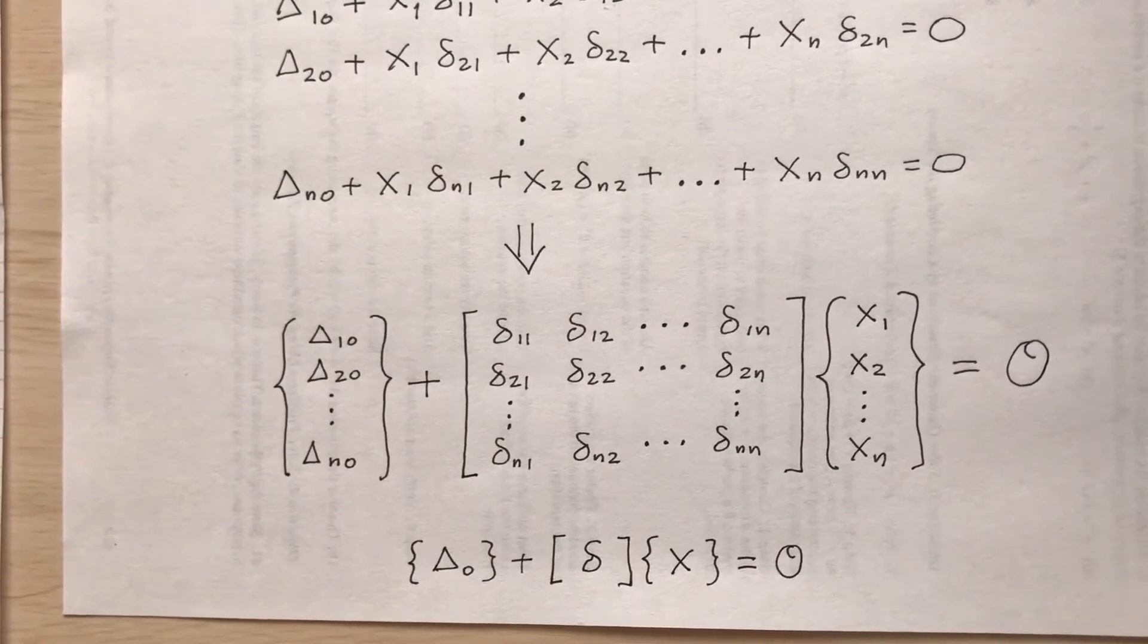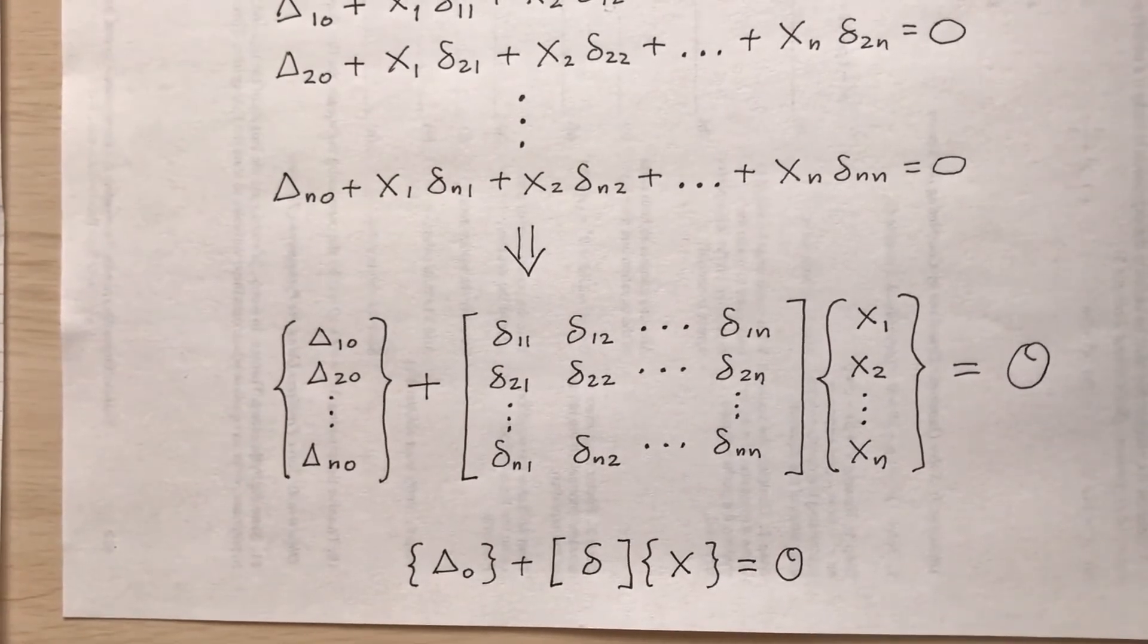So sometimes the deltas are unknown, the real deflections. Sometimes the redundance are unknown, the x's. So you would have to manipulate the matrices to solve for one of those two unknowns.